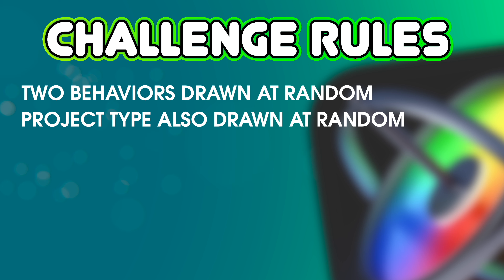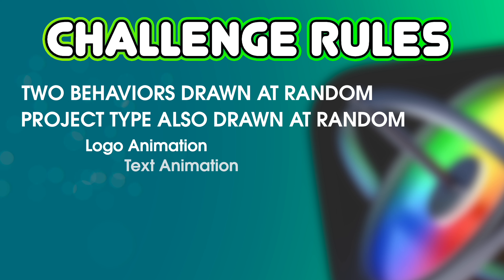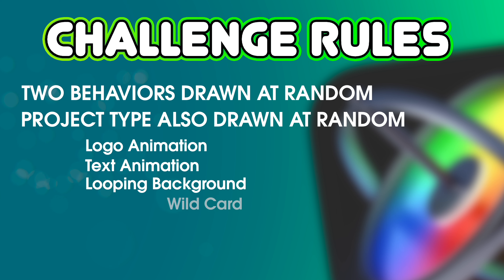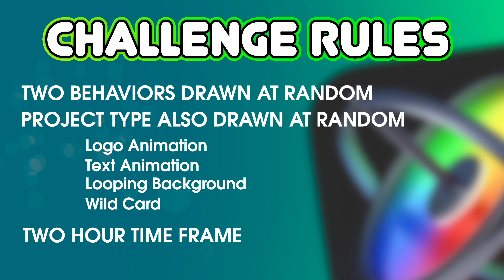If you guys haven't seen the challenge before, this is how it works. I'm going to draw two random Apple Motion behaviors that Ian and I each have to use in our own projects. We're also working on the same type of project, which I draw at random. The options are logo animation, text animation, looping background, or wild card — which means we can make anything we want. We each have two hours to get our projects done, then we reveal our results to each other and to you. I like to say this isn't a competition — it's an exposition of two creatives.